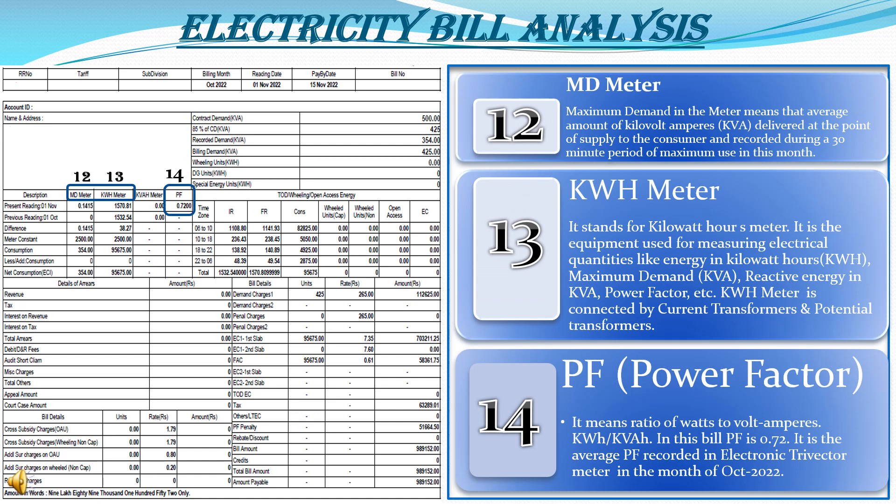MD meter refers to the maximum demand meter — the average amount of KVA delivered at the point of supply to the consumer, recorded during a 30-minute period maximum. This means the consumer utilized a maximum peak load in a duration of 30 minutes from the electricity supply company, which is recorded in the meter. The KWH meter stands for kilowatt hour meter — equipment used for measuring electrical quantities like energy in KWH, maximum demand in KVA, and reactive energy in KVAR.